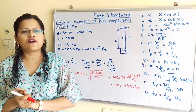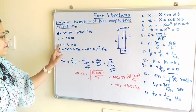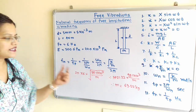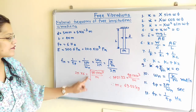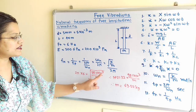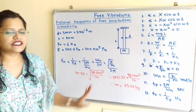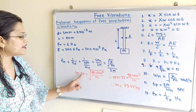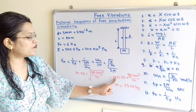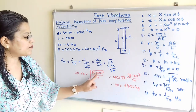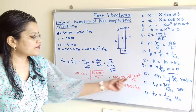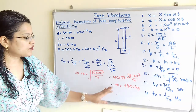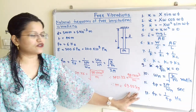Now we put the value of k into the equation for fn. Since fn is 6 Hz, transferring 2 pi to the left-hand side: 6 multiplied by 2 pi equals square root of 98.1 into 10 raised to 3 divided by m. Taking square on both sides: (2 pi into 6) squared equals 1421.22, which equals 98.1 into 10 raised to 3 divided by m. Solving, m equals 69.02 kilogram.